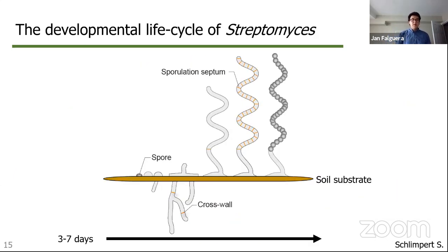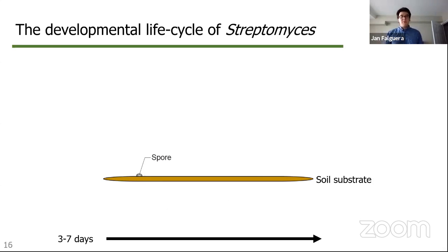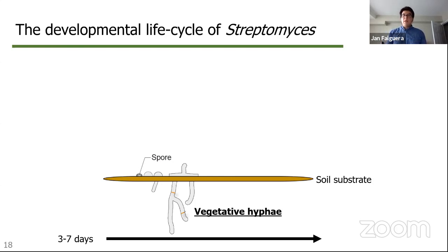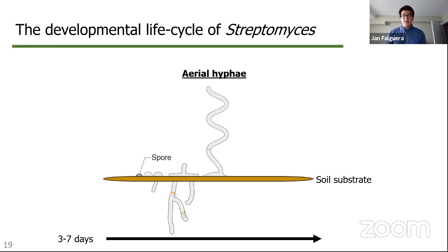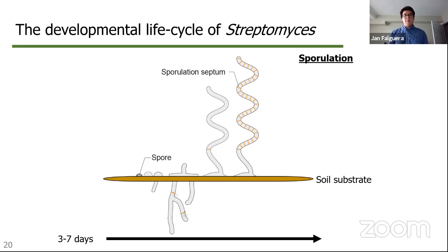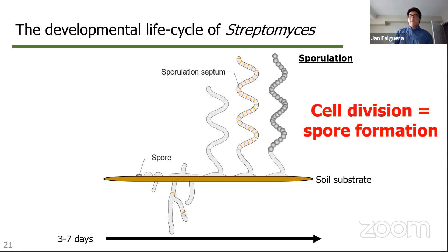The Streptomyces are gram-positive soil-dwelling bacteria which produce many of the natural products that we like to study. What's most interesting to me is their very interesting life cycle. That life cycle starts from a single spore, which upon finding a suitable environment will germinate. The resultant germ tube then burrows deep into the soil substrate and creates a colony known as the vegetative hyphae. These grow by tip extension and branching until developmental signals are relayed such that the direction of growth reverses, and the hyphae break through the soil to create the aerial hyphae.